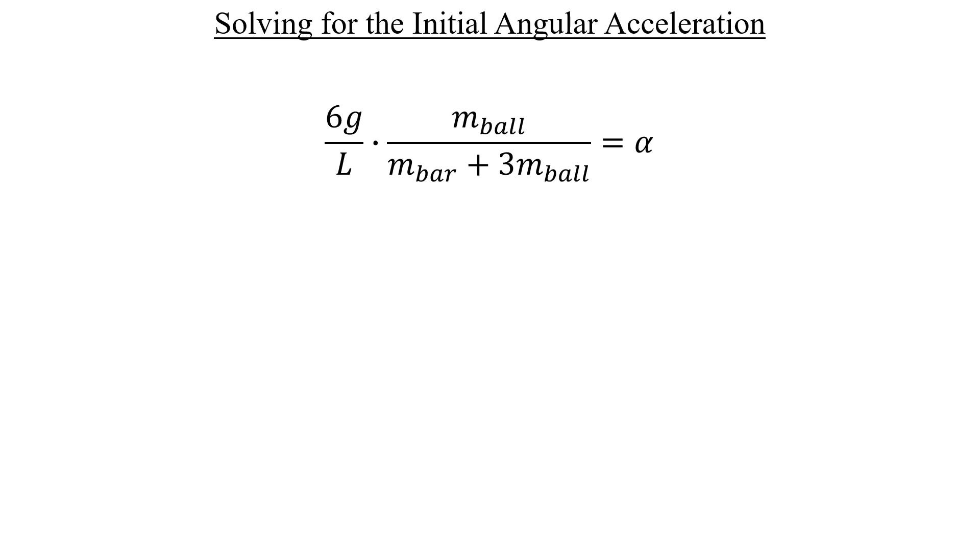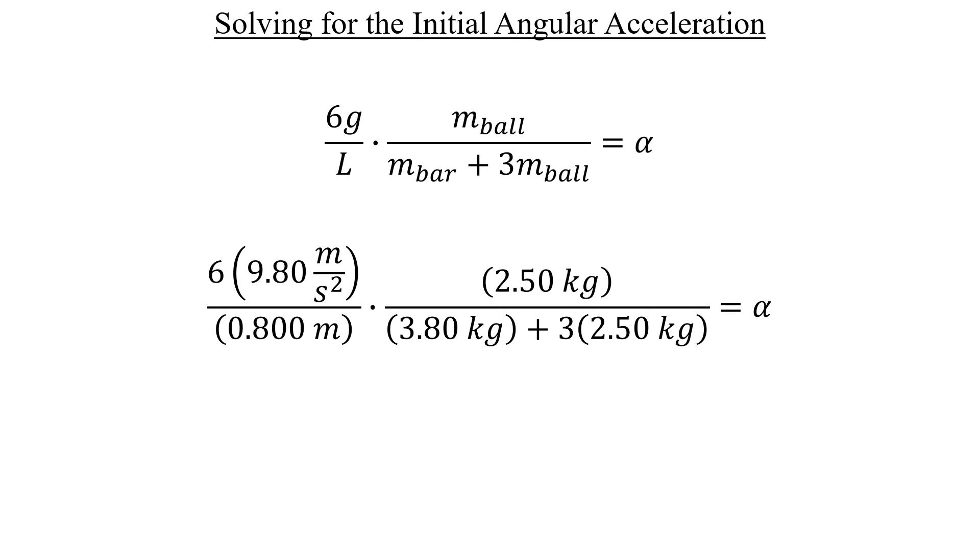There's no further simplification required, so let's go ahead and start plugging in some numbers. And here it's easy to see that the meters units cancel out in the first ratio, and the kilograms units cancel out in the second. Therefore, the value of our angular acceleration right as the rotation starts is approximately 16.3 radians per second squared. And that's our answer to part A.